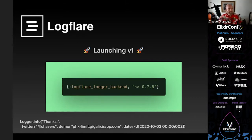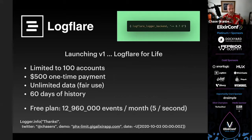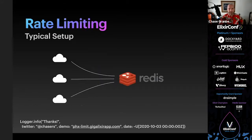We've been using it in production for a long time since the whole thing is written in Elixir. At this point we're basically at feature parity with Papertrail but the interface is much faster, we ingest stuff much faster, you can send us any JSON, and we have Gigalixir log drain support. We also have a special $500 one-time payment for LogFlare for life, and a free plan as well. Anyway, I'm here to talk about rate limiting because I had to build a rate limiter for LogFlare.